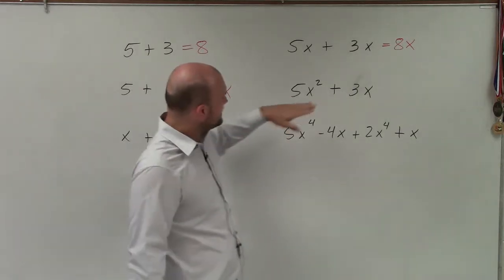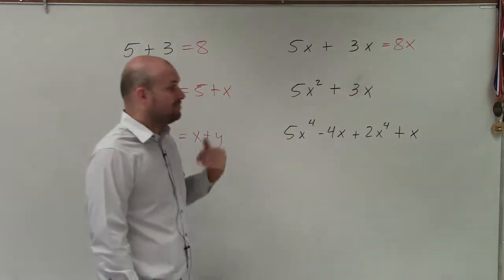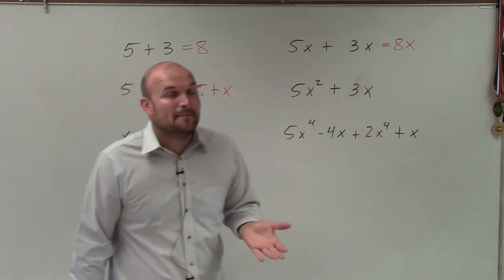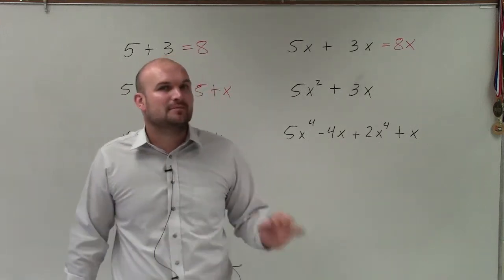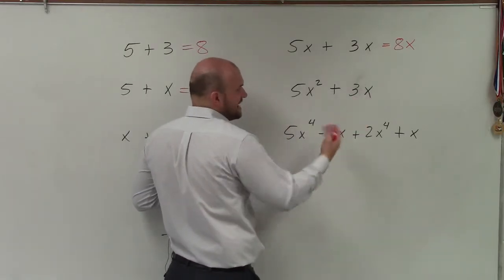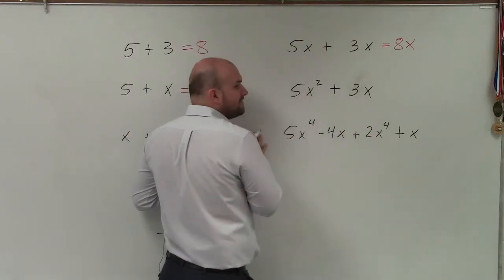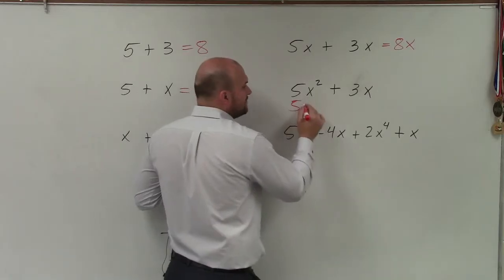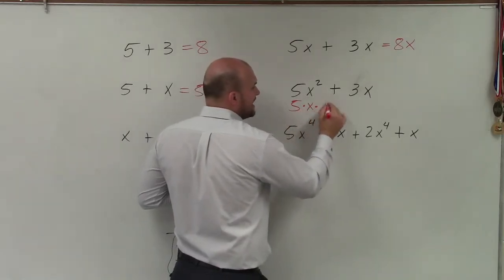Now, here again, where it gets a little more confusing. Here, I have 5x squared plus 3x. So they both have x, but again, they do not have the same variable factors. Why? Because, well, what are the factors of x? We already said we can factor x into x times 1, right? Well, what are the variable factors of x squared? The variable factors of x squared are x times x.